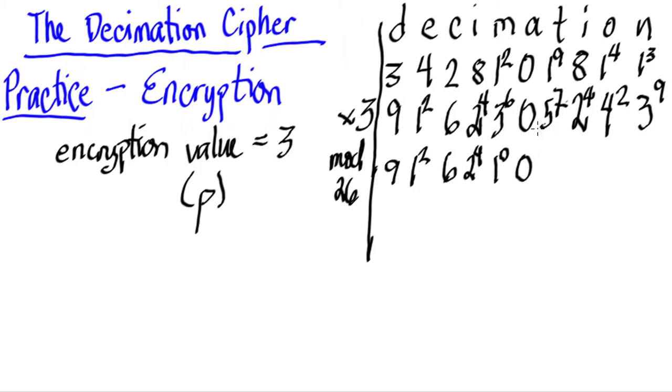This becomes 0. 57 divided by 26 is going to be 2 remainder 5, because 26 times 2 is going to give us 52, so that's remainder 5. This still becomes 24. 42 divided by 26, that's only 1, so that's 1 remainder...